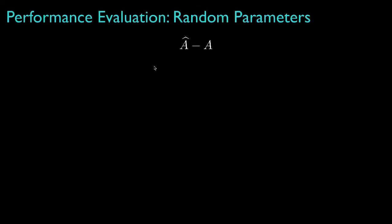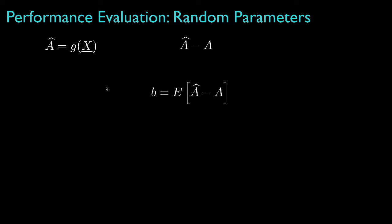The main way that we'll evaluate the performance of an estimator is by the first and second moments of the estimation error, a-hat minus a. Because the estimator is a function of the random observation, this error is a function of two random quantities: the underlying parameter a and the random observation x. The bias for this estimator is defined as the expected value of the estimation error. An unbiased estimator will have a bias equal to zero; a biased estimator will have a non-zero bias.